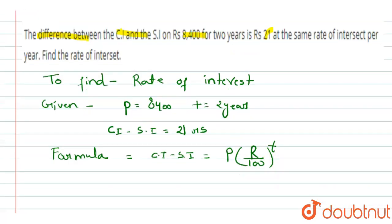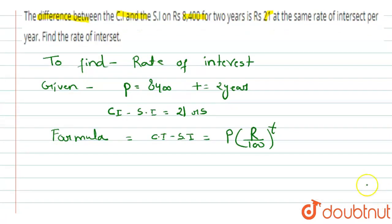Now we put all the values in this formula and we get: 21 equals to 8400 times r (we don't know the rate, so I write here r), and t is 2 years.